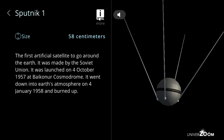Sputnik 1, size: 58 centimeters. The first artificial satellite to go around the Earth. It was made by the Soviet Union. It was launched on the 4th of October 1957 at Baikonur Cosmodrome. It went down into Earth's atmosphere on the 4th of January 1958 and burned up.